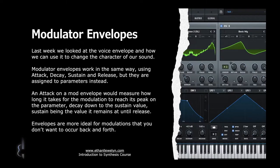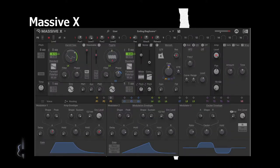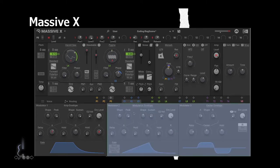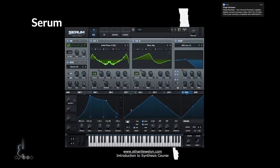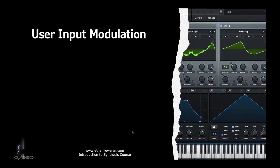Envelopes are more ideal for modulations that you don't want to occur back and forth - if it's a one-time modulation it works really well. If you have a pluck sound and want to change the character at the initial attack, this is a great way to do it. On Massive X you can find your modulation envelopes here - the modulation envelope and exciter envelope. On Serum you can find them all just there as well.